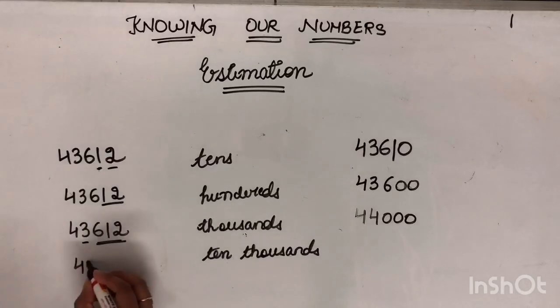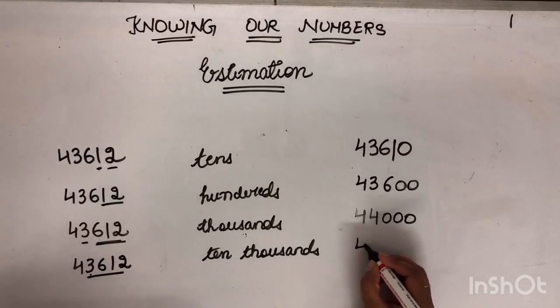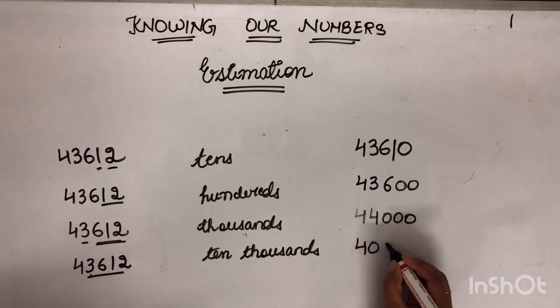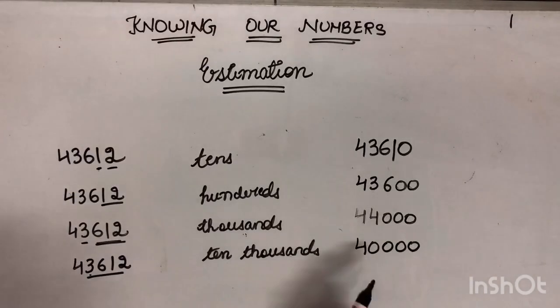Next we have to round off this number to nearest 10,000. 10,000. How many zeros do we have? 4. So it means we want 4 zeros here. Now this number 3, is this less than 5 or greater than 5? Less than 5. So 4 will remain unchanged. So this is the approximate value of this number by rounding off to nearest 10,000.